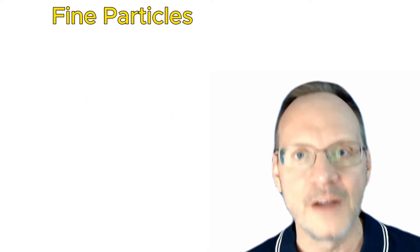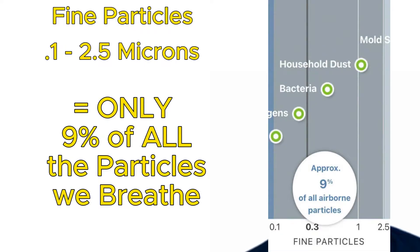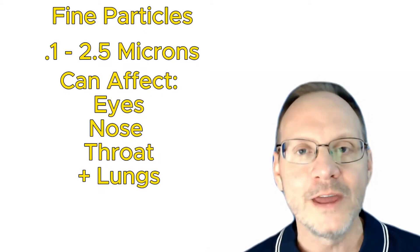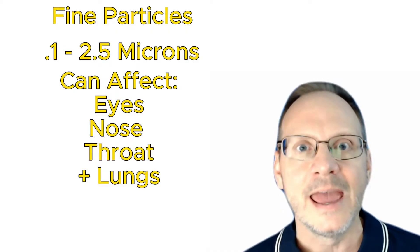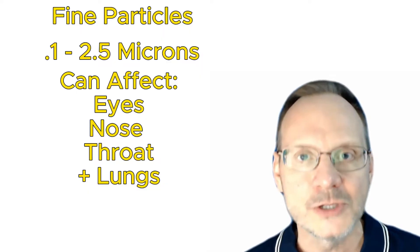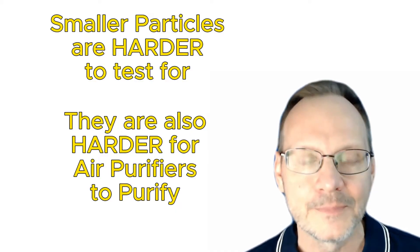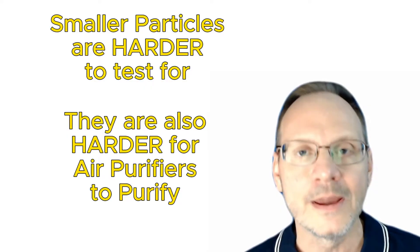The second category of particles are called fine particles, and they are 0.1 microns to 2.5 microns in diameter — invisible to the naked eye. Examples of fine particles are household dust, bacteria, and dust mite allergens. Fine particles make up only about 9% of all the particles in the air we breathe. They can affect our eyes, nose, and throat like coarse particles, but since they are smaller they can also get into our lungs. In general, the smaller the particles are, the easier they penetrate our bodies and the deeper they go. I also believe smaller particles are harder to test for and harder for air purifiers to remove.